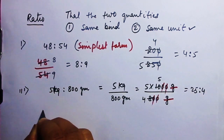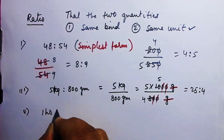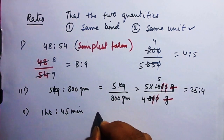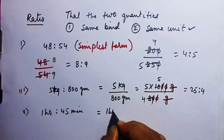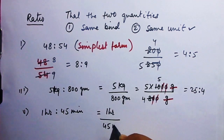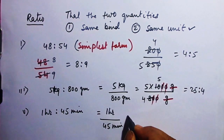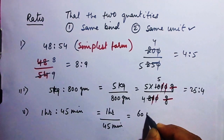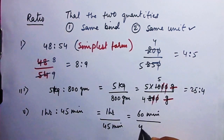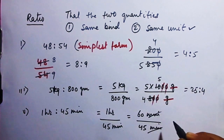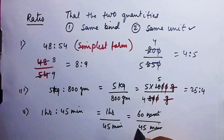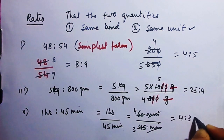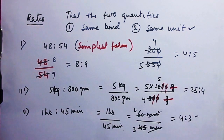Number 5: 1 hour is to 45 minutes. One hour equals 60 minutes, so convert: 60 minutes by 45 minutes. They are now in the same unit. Cancel by 15: 15 fours are 60 and 15 threes are 45, giving 4 is to 3.